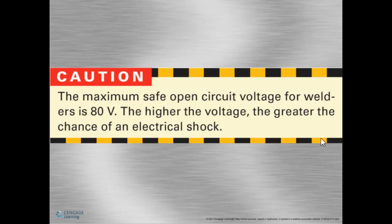We're working with some very high power electrical current. The maximum open circuit voltage for a welding machine is 80 volts. The higher the voltage, the greater the chance of shock, so it's important to be aware. Most welding machines will not allow you to turn up the machine to unsafe levels — most times the machine itself will have a failsafe to protect the user.